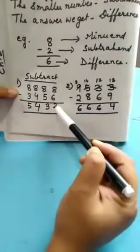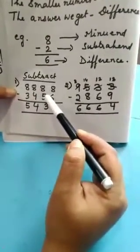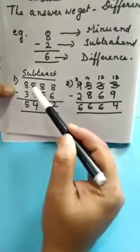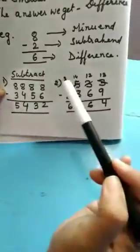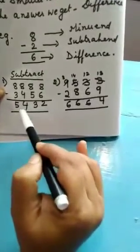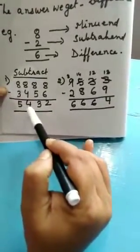8 minus 6, 2. 8 minus 5, 3. 8 minus 4, 4. 8 minus 3, 5. So, your difference is 5,432.